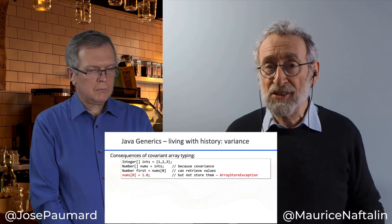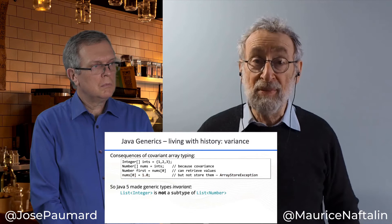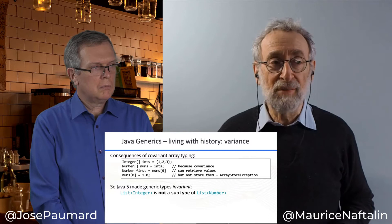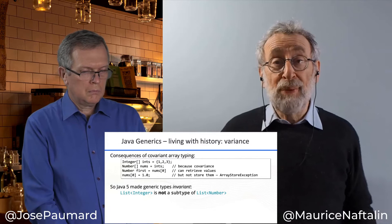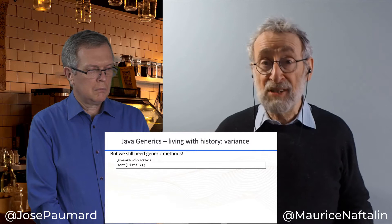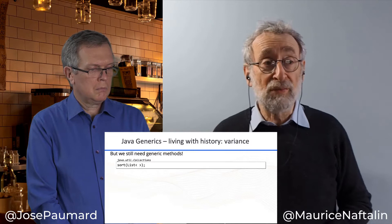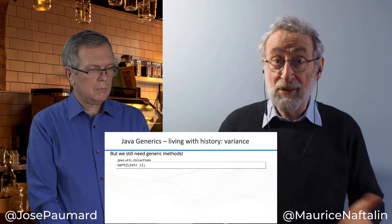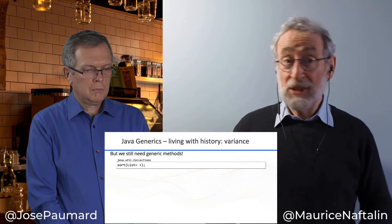They didn't want this situation for generics, so they adopted a different scheme: invariant typing. A List of Integer is not a subtype of a List of Number — in fact it has no direct relation to a List of Number at all. So we don't get the runtime exception problem. But wait — we introduced covariance because we really needed it, for example for a sort method. Java 5 does have a sort method defined in java.util.Collections which works on a list of something. So invariant typing is helpful, but we've lost something because we still need generic methods.